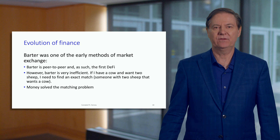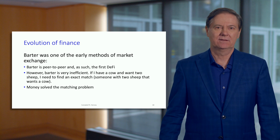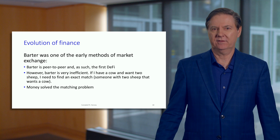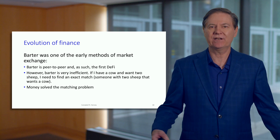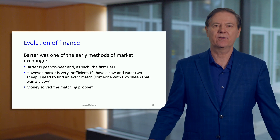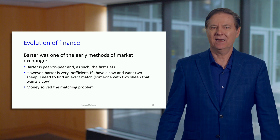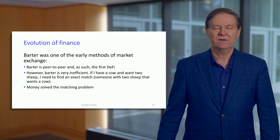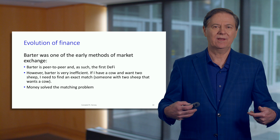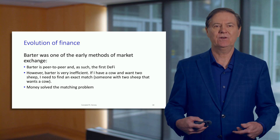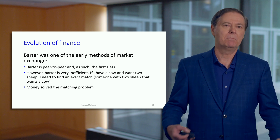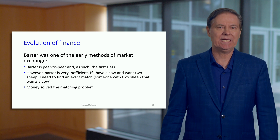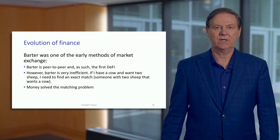What actually happened was that a system of credit evolved — or gifts, as it was called — where you would give somebody something and then they would give in return at some other point a surplus of what they actually had. Again, this type of market economy was very inefficient. The main inefficiency was the matching problem: you had to have an exchange that made sense to both peers. So money was introduced, and it largely solved the matching problem.